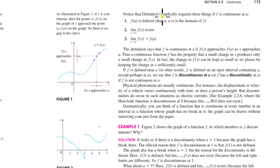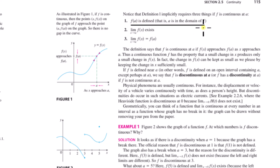The definition of continuity implicitly requires three things if f is continuous at a. First, f(a) is defined — you have to be able to plug in a number and get out a finite value. Second, the limit as x approaches a of f(x) exists.